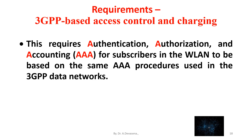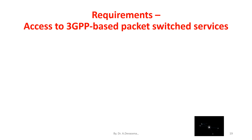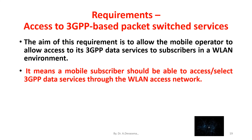The second requirement is 3GPP-based access control and charging. This requires authentication, authorization, and accounting for subscribers in the WLAN to be based on the same AAA procedures used in the 3GPP data networks. It means a mobile subscriber can use their subscriber identity module. The third requirement is access to 3GPP-based packet switched services. The aim of this requirement is to allow the mobile operator to allow access to its 3GPP data services to subscribers in a WLAN environment.